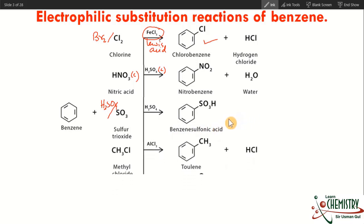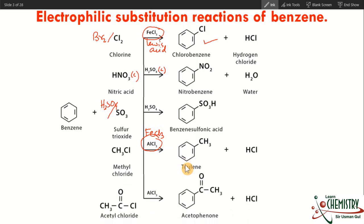Number four is alkylation, also called Friedel-Crafts alkylation: an alkyl group gets attached to the benzene ring using an alkyl halide with FeCl3 as catalyst to give an alkylated product. Number five is acylation: benzene reacts with an acyl chloride in the presence of the same Lewis acid catalyst used in halogenation and alkylation, giving a product called acetophenone, which is a type of ketone. These are the five most common reactions of benzene.